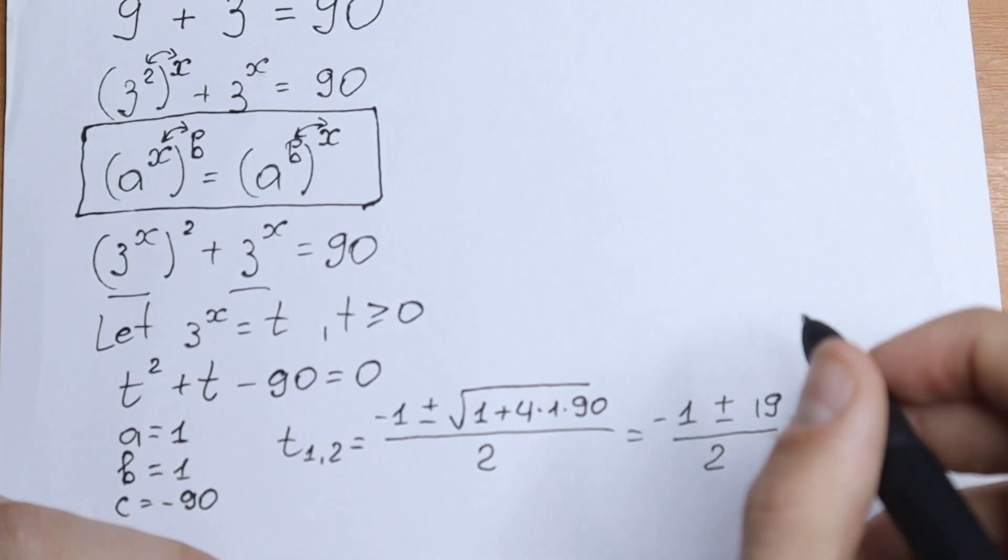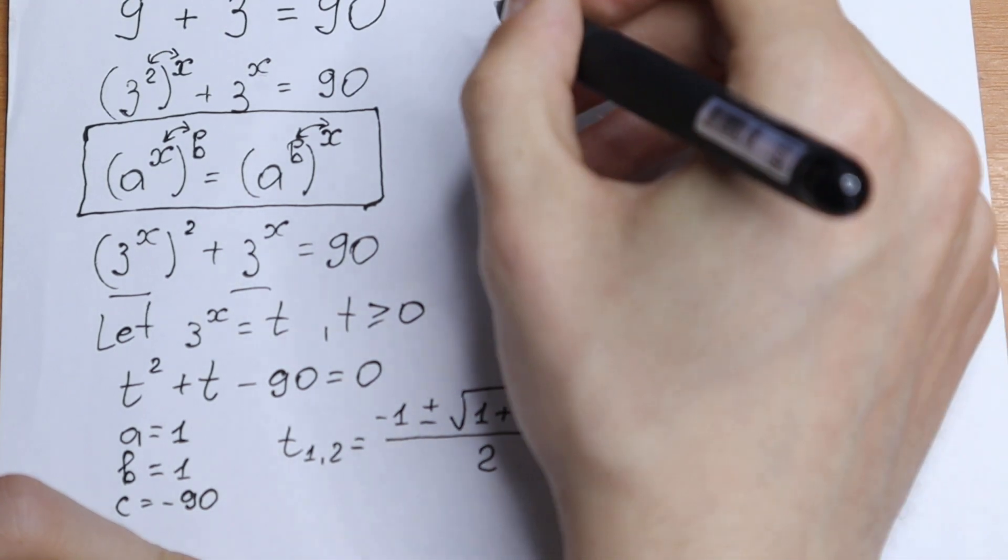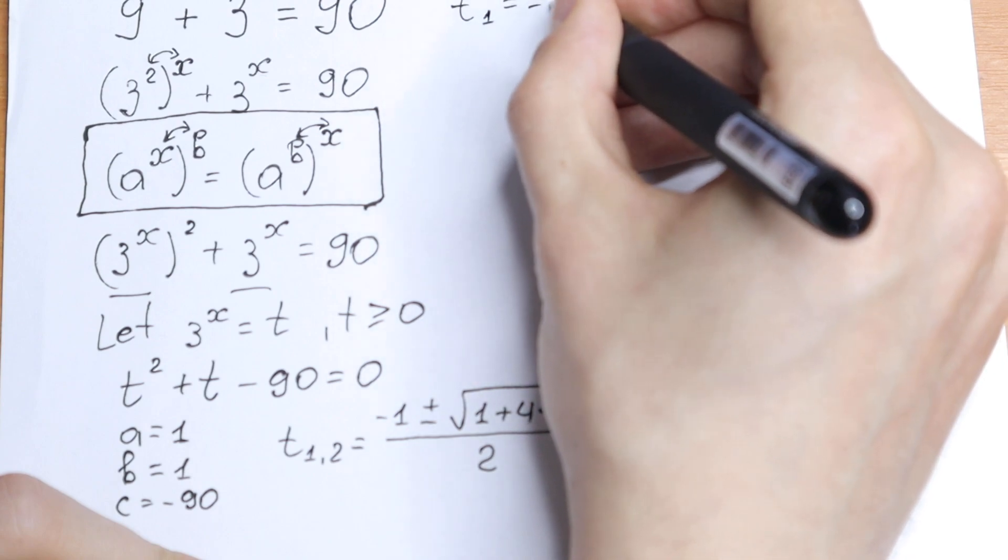And let's find this t1 and t2. On the first side let's take minus. Minus 1 minus 19 will be minus 20. Minus 20 over 2 will be minus 10. So t1 equal to minus 10.